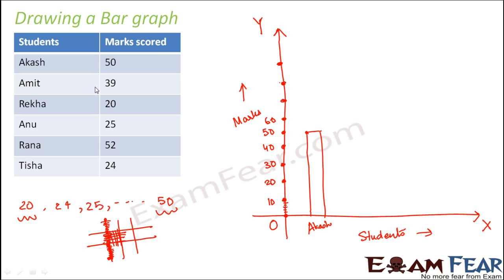The next bar is for Amit who scored 39, somewhere here. Then the third bar is for Rekha who scored 20. The fourth bar is for Anu who scored 25, which will lie exactly in the middle of 20 and 30. Then you have Rana who scored 52, somewhere here. And finally Trisha who scored 24, slightly below 25. So this is how you represent a bar graph.